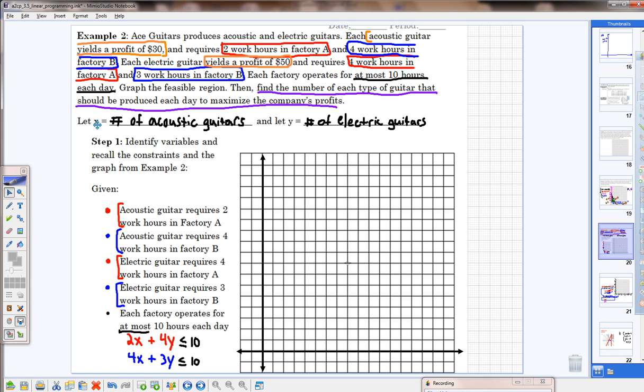So the purple identifies what we need to know. Find the number of each type of guitar. Well, what types of guitars do we have here? We have acoustic guitars and electric guitars. So we're going to let x equal the number of acoustic guitars and let y equal the number of electric guitars. That's based on what we need to know. Then we need to, we've identified the variables already.